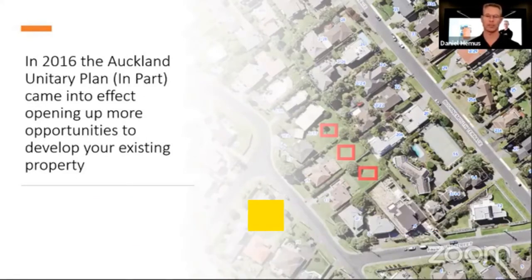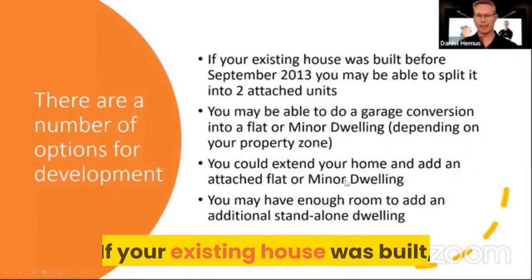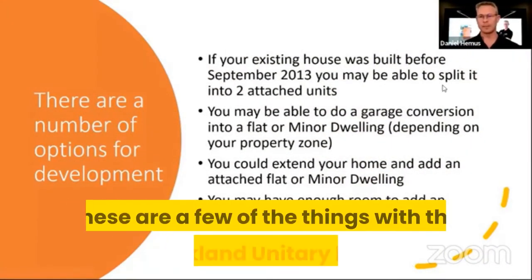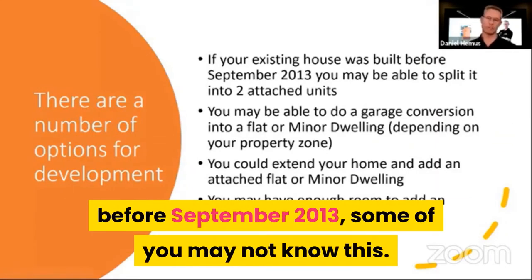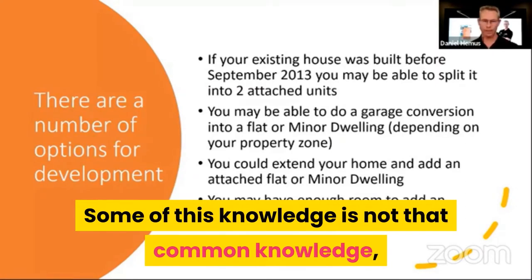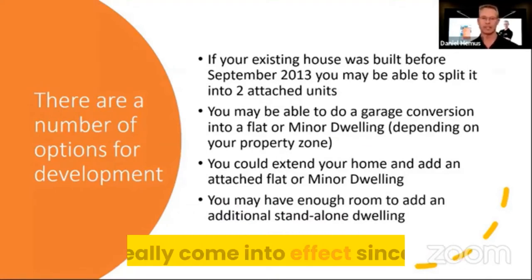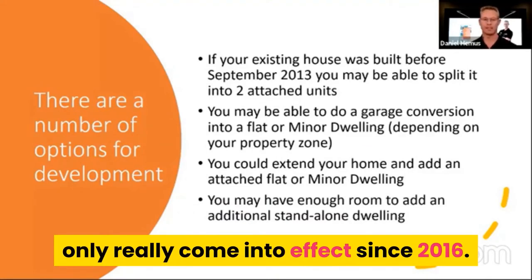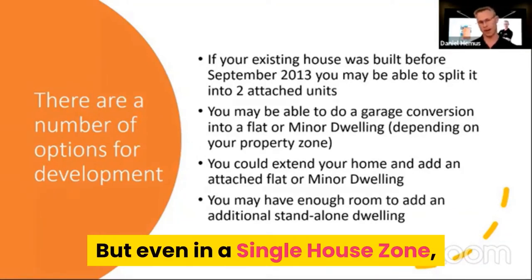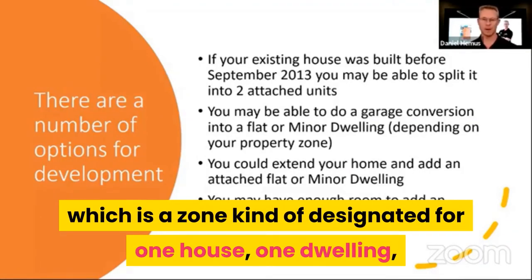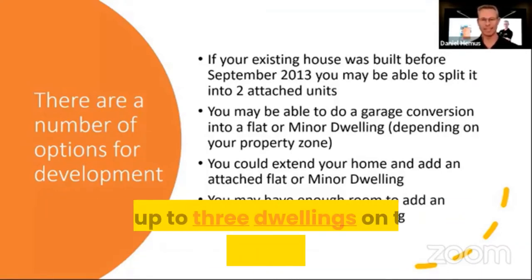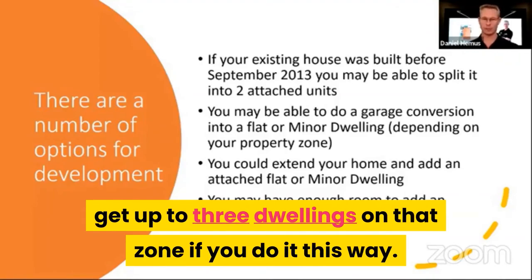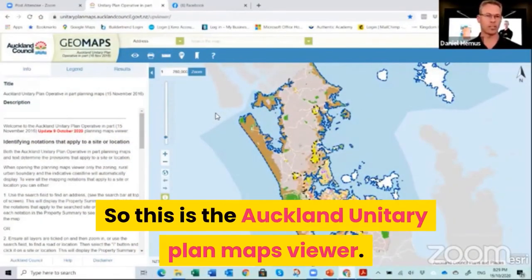That was one of the ideas behind the Auckland Unitary Plan — to increase housing density, because Auckland is so spread out compared to other countries. If your existing house was built before September 2013, some of you may not know this, but even in a single house zone — a zone designated for one dwelling — you are able to get up to three dwellings on that zone if you do it the right way.